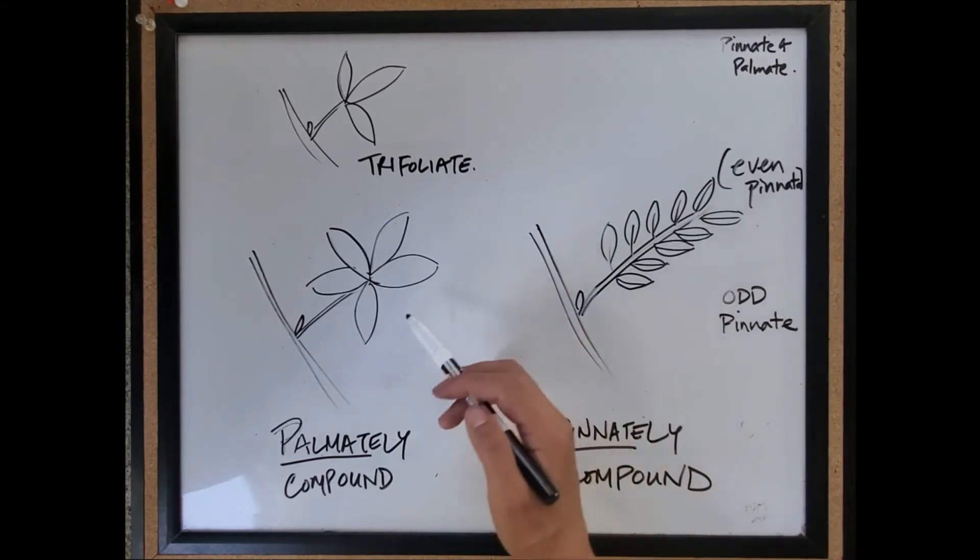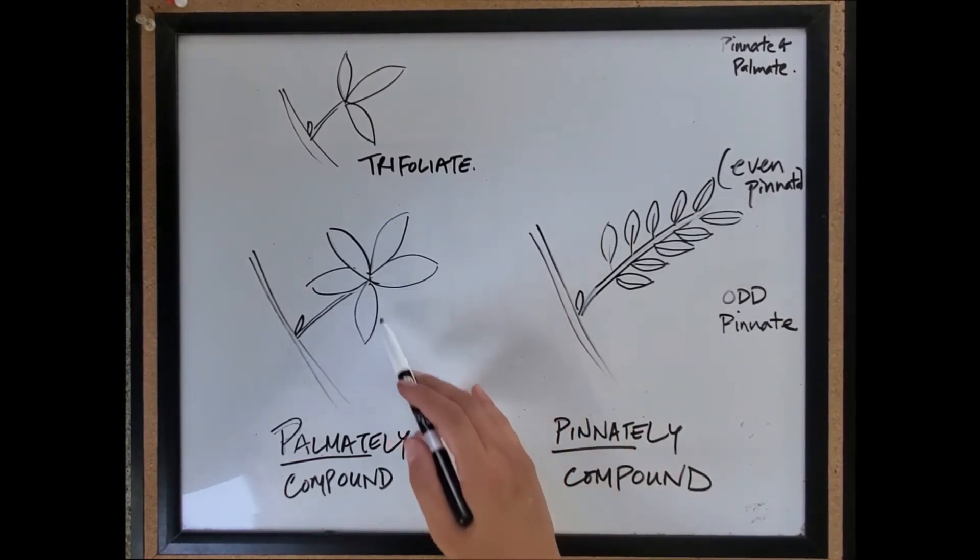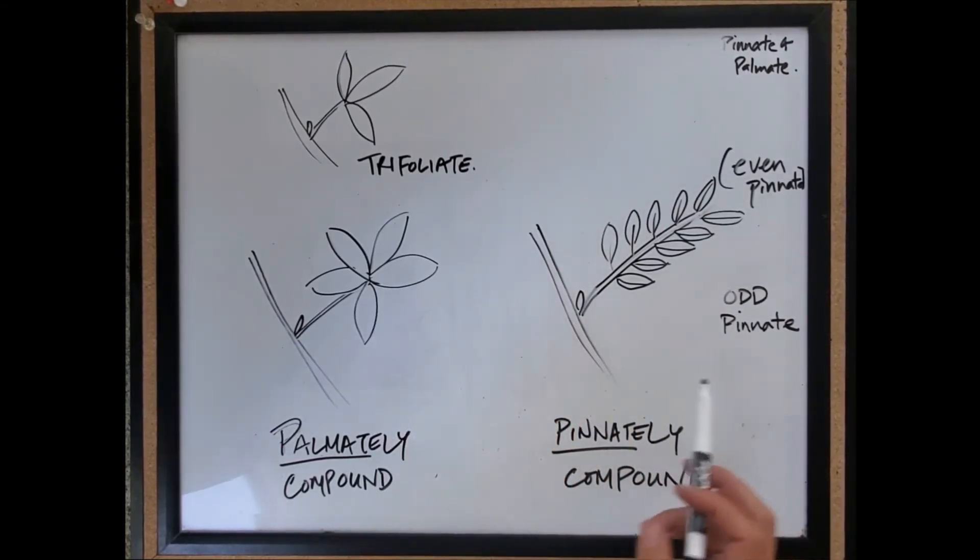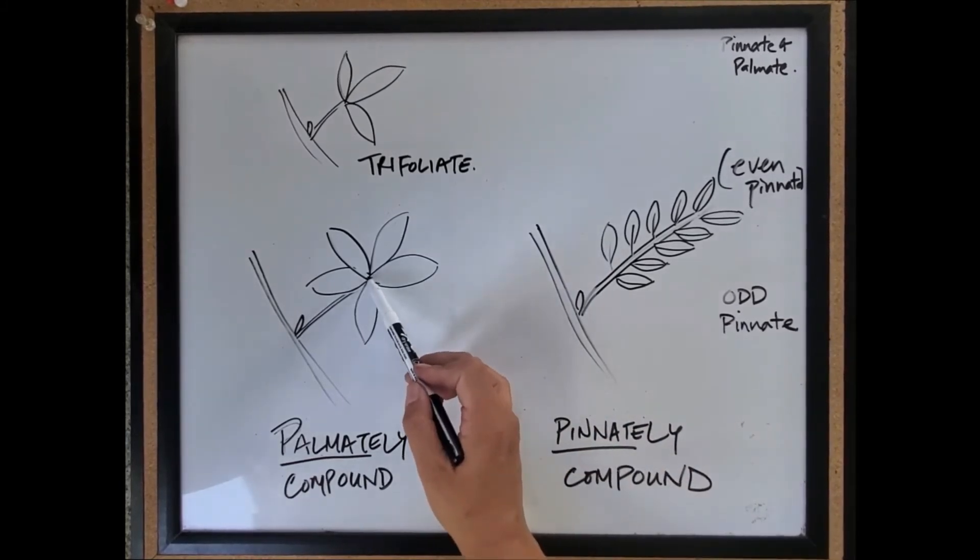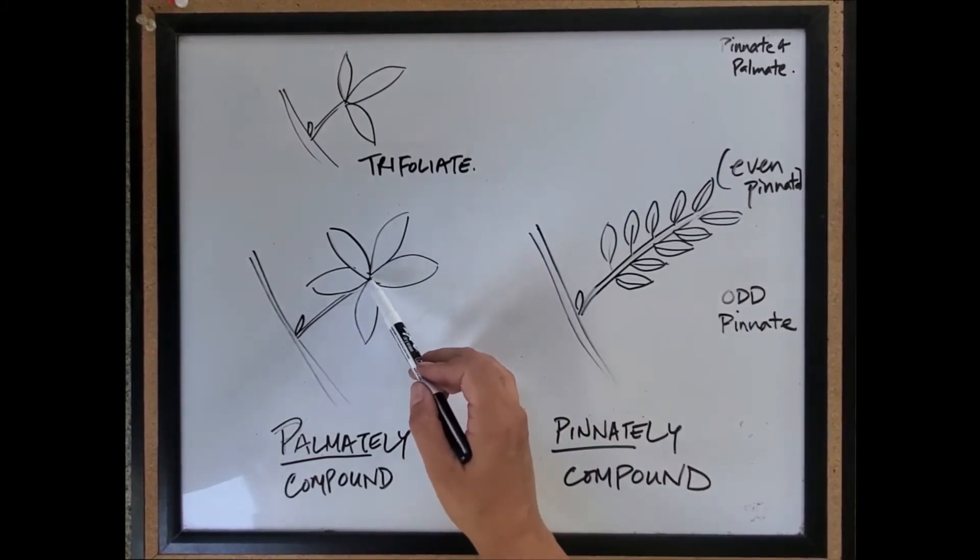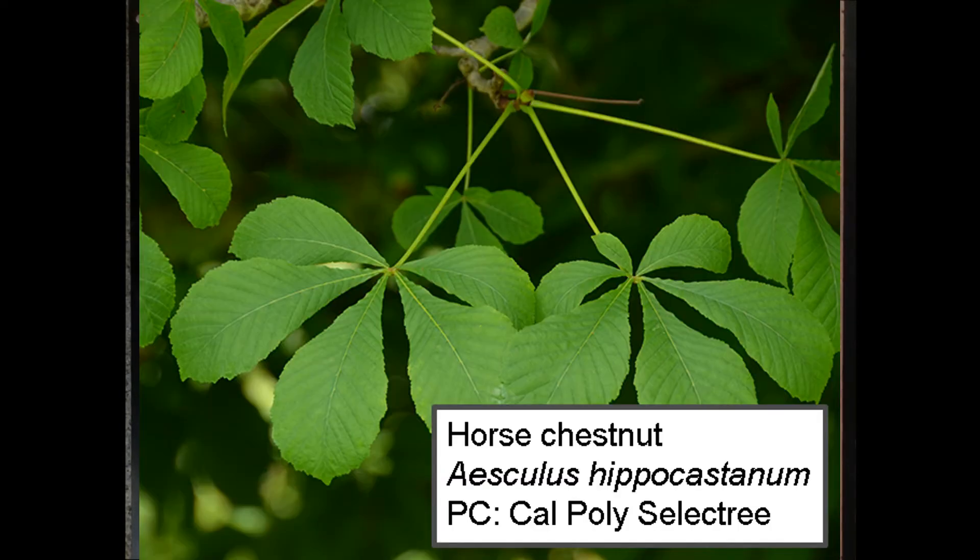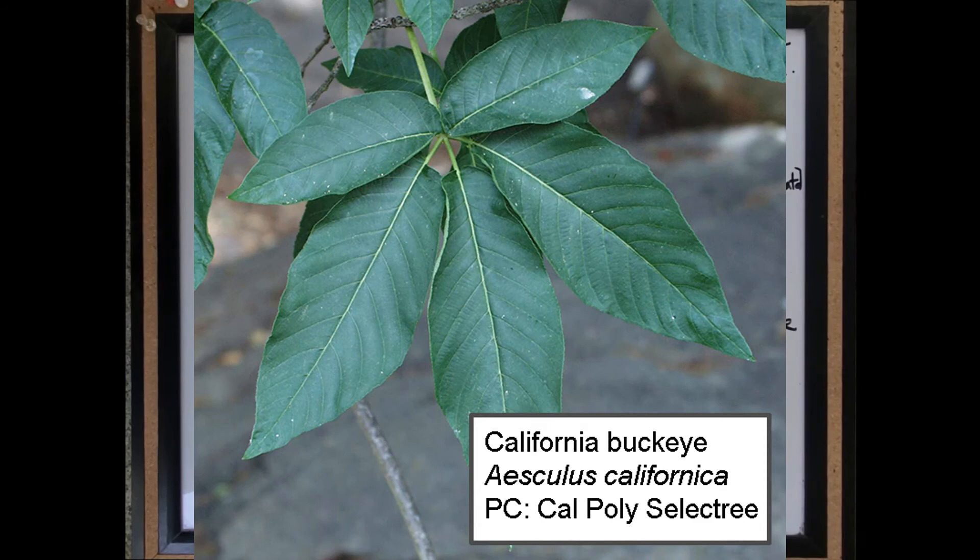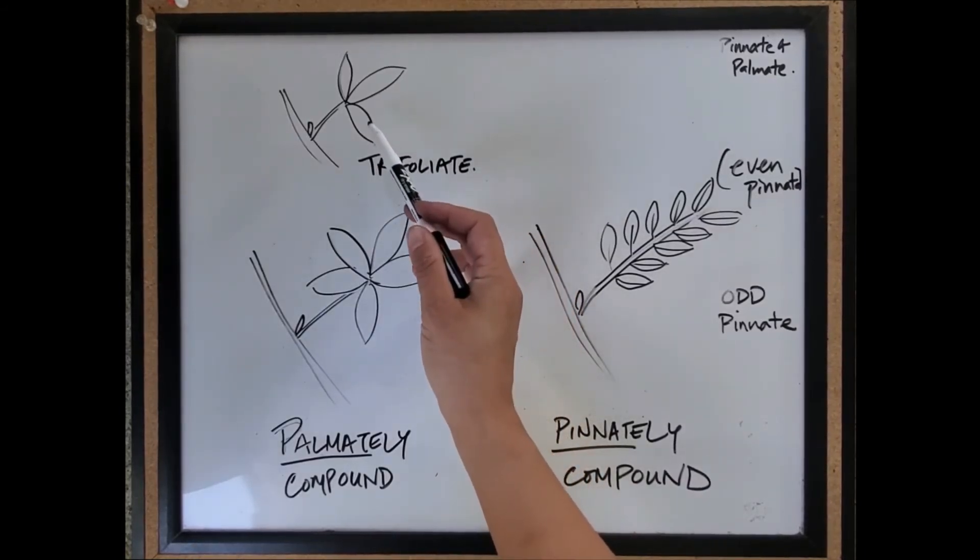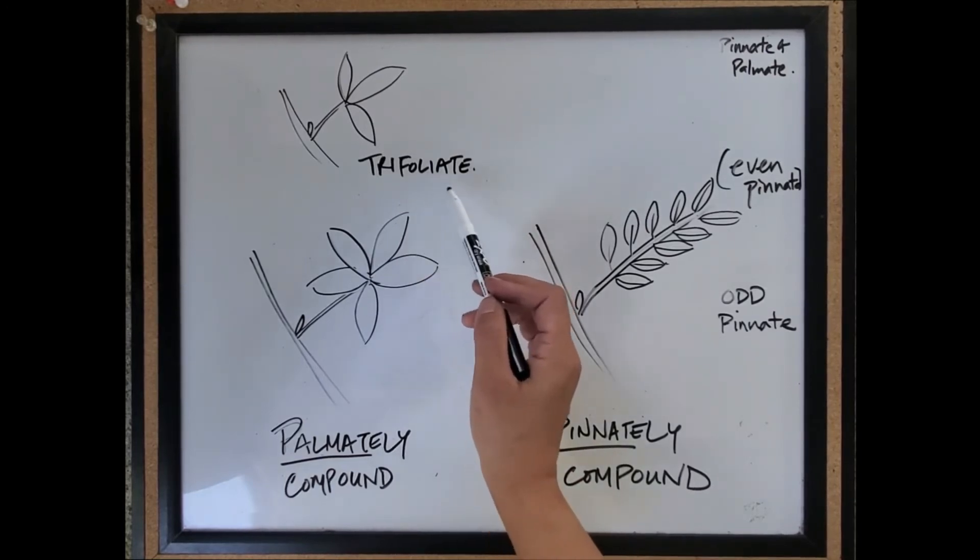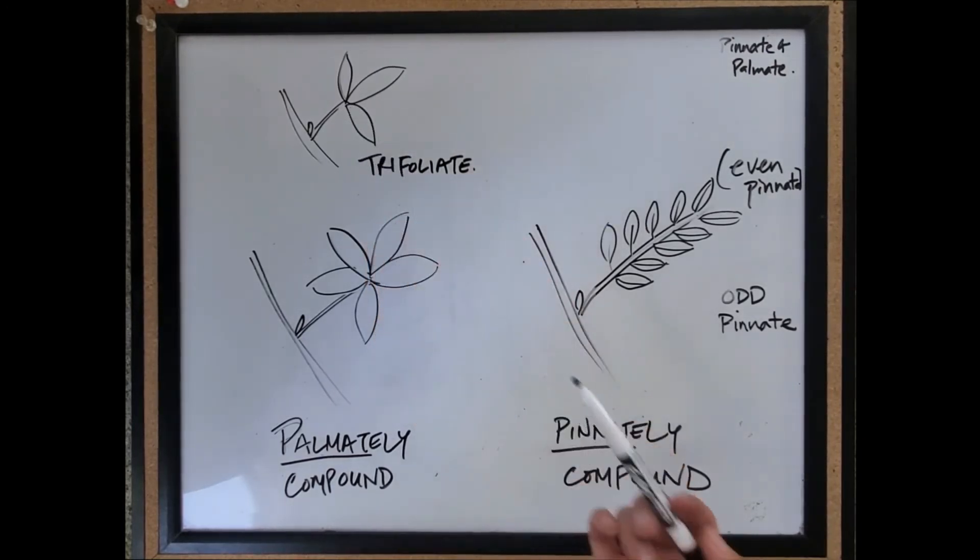You also have palmately compound leaves, which differ from the pinnately compound leaves because all the leaflets are attached to the same point in the stem. Horse chestnuts or buckeyes are an example of this. You also have a similar version where you have three leaflets specifically and they are all attached to the same point.